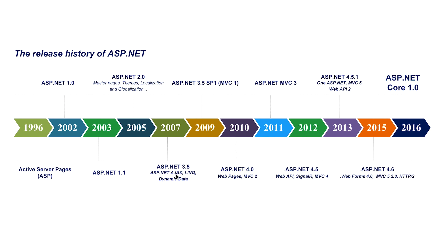In 2007 came LINQ, dynamic data, and AJAX. In 2009 came the major step of MVC1 with ASP.NET 3.5 SP1. MVC kept growing — around 2011 MVC3 was introduced and it started to become a complete, mature framework. Many companies still use ASP.NET MVC 3 and above, as not all have adopted ASP.NET Core yet. In 2012 more features were added: Web API, SignalR, and MVC4. Finally, in 2016 they released ASP.NET Core 1. There have been enhancements since, and there will likely be more. That's a brief history of ASP.NET — it's been a long journey. See you in the next video.